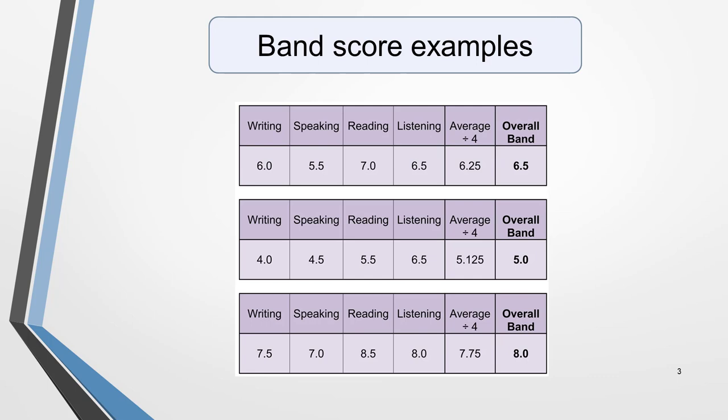Each part of the test is given an individual score. So your overall exam result will be made up of a score for each of these parts and an overall score. The overall band score is the average of the four individual scores.